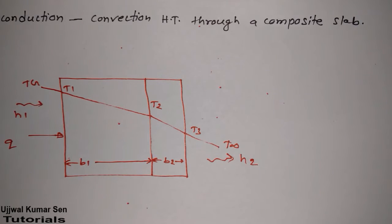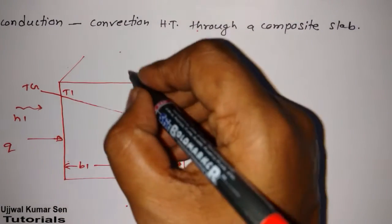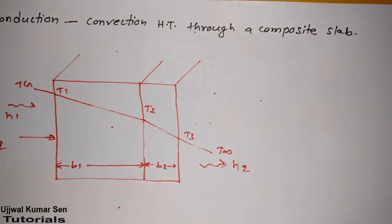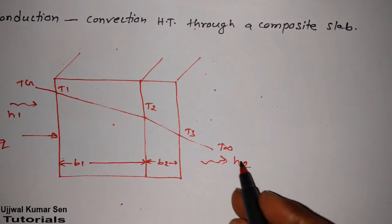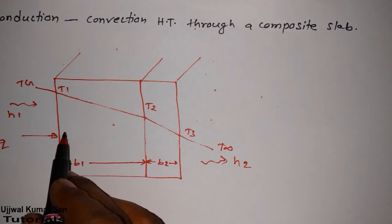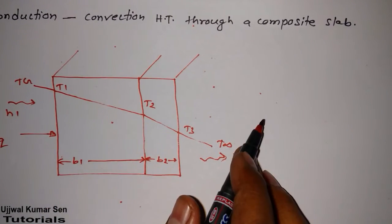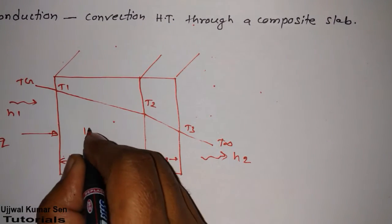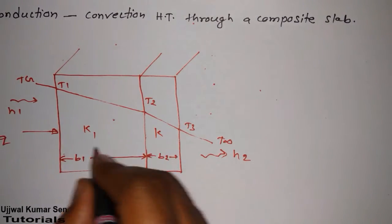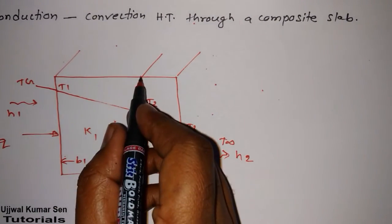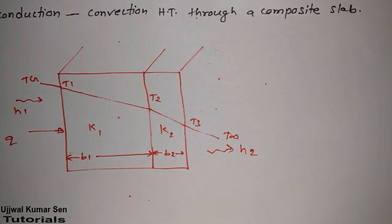We have a diagram here. In this diagram, convection is happening on both sides, and because of the composite slab, both slabs are of different material with different temperatures and different thermal conductivities. The thermal conductivity of the first material is k1 and the other one is k2.